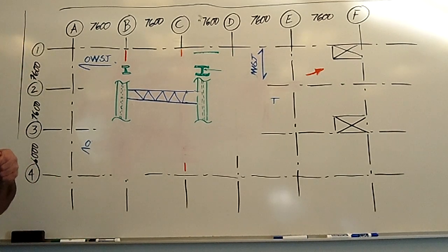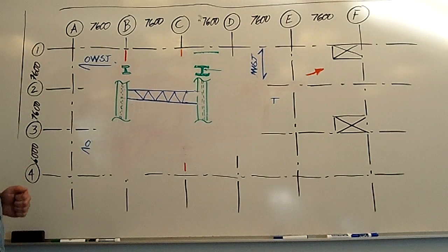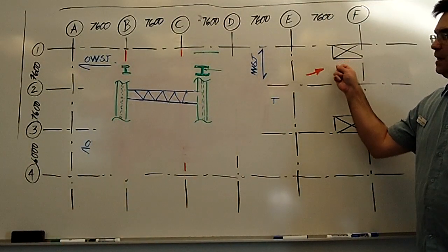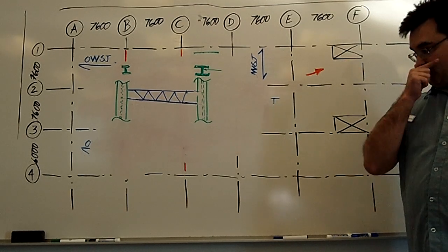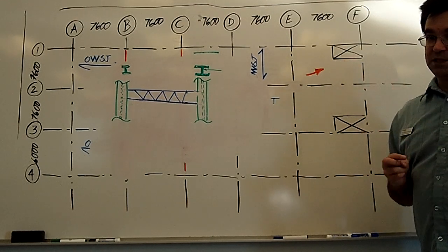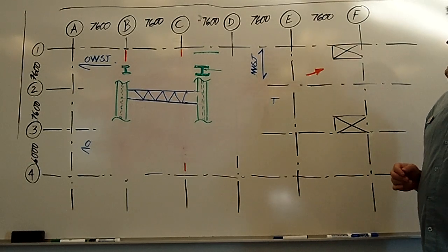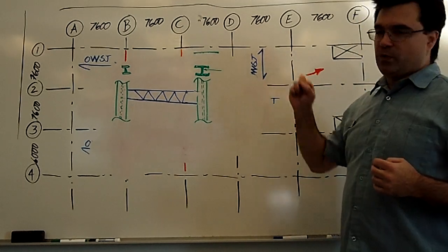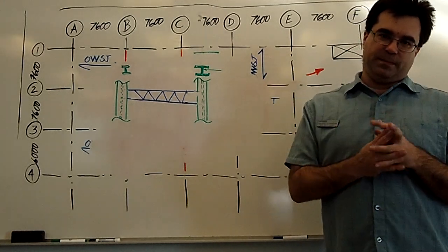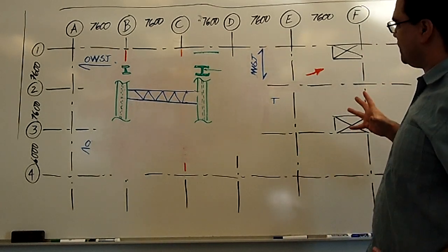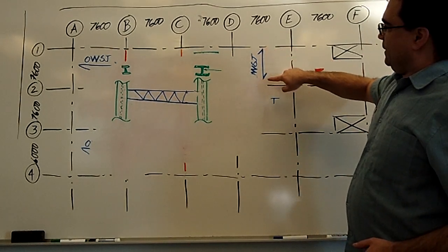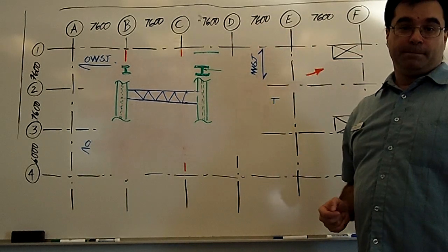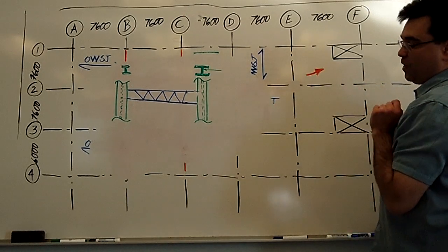Let's talk a moment then about how to frame around a stairway. The first thing you have to do when you're framing around the stairway is first figure out what direction your secondary structural elements are going. Remember open web steel joist or the beams, the beam joists that get repeated? So let's say the open web steel joist for this portion of the building go north-south.